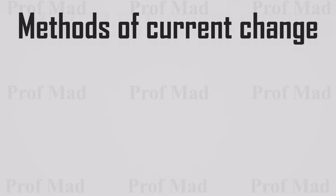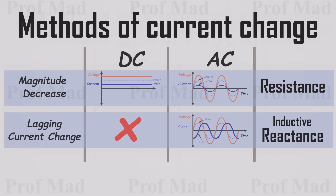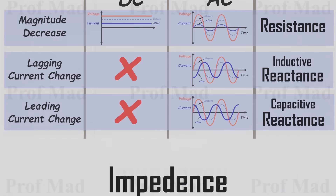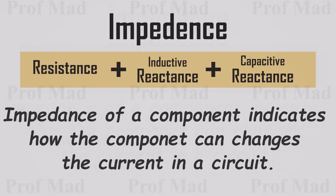Now that we understand how different types of components affect the current in a circuit, the three primary factors influencing current are resistance, inductive reactance, and capacitive reactance. Resistance consistently decreases the current and is observable in both AC and DC circuits. Inductive reactance causes the current in a circuit to lag behind the voltage, and it's exclusively observable in AC circuits. Conversely, capacitive reactance makes the current lead the voltage, and it too can only be observed in AC circuits. The cumulative effect of these factors is referred to as impedance. In simple terms, impedance of a component signifies how it modifies the current within a circuit.